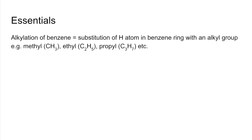Alkylation of benzene is where you substitute a hydrogen atom in the benzene ring with an alkyl group. So there's three examples for you: methyl, ethyl, and propyl.